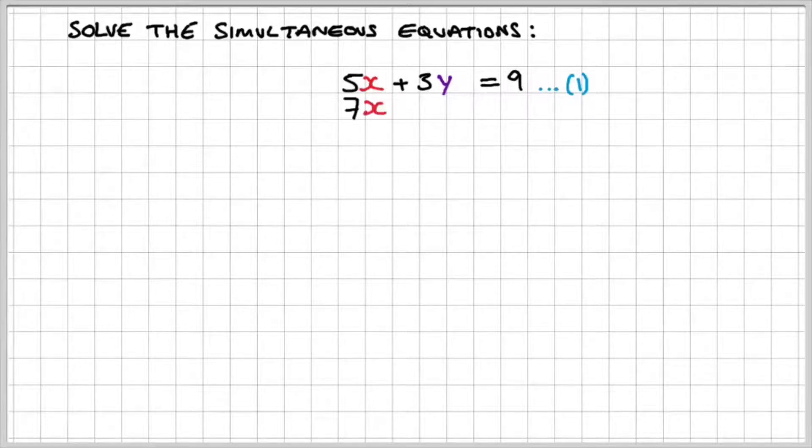That's equation 1. And then we have 7x minus 2y is equal to 25. That's equation 2.